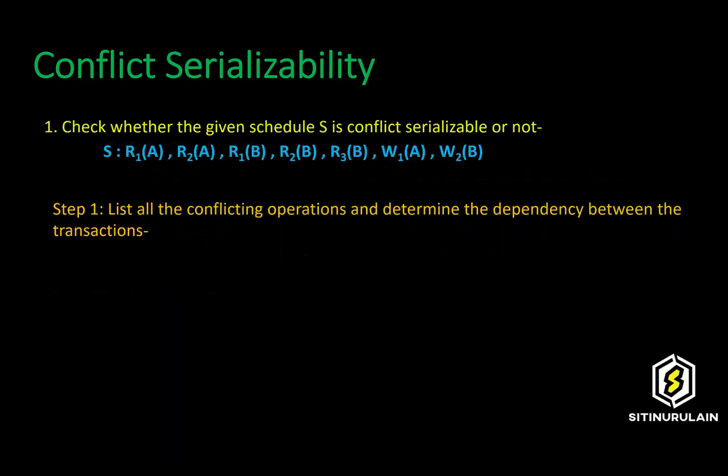Given Schedule S in the slide, check whether it is conflict serializable or not. The first step is to list all the conflicting operations and determine the dependency between the transactions. From Schedule S we can see there are three conflicting operations.